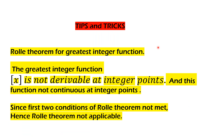One more tip: Rolle's theorem for the greatest integer function. If you are given a function in the greatest integer function bracket notation, these types of functions are not derivable at integer points and not continuous at integer points. So just write that the function is not continuous and not differentiable. Therefore, the first two conditions of Rolle's theorem are not met and Rolle's theorem is not applicable. No need to go to the third condition.